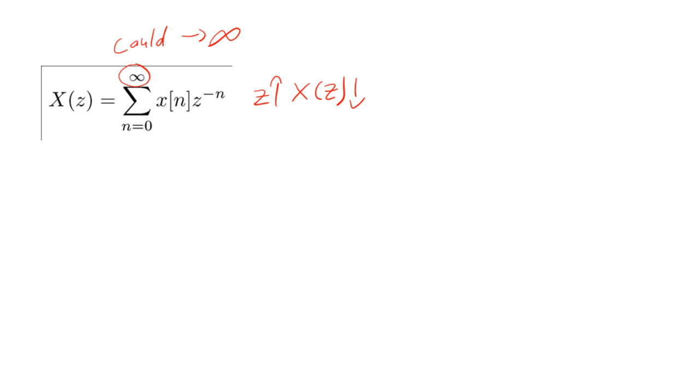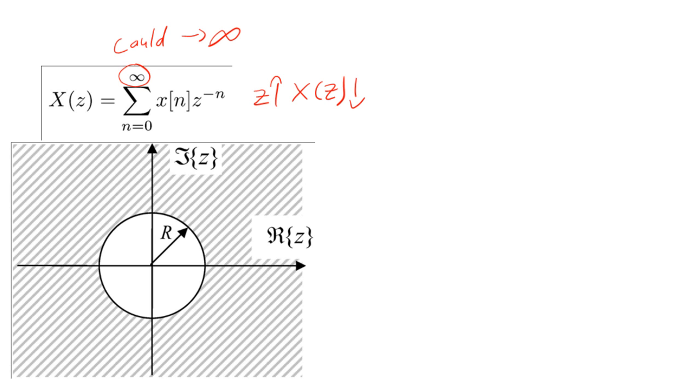When x of n times Z^(-n) shrinks to 0, the sequence will converge towards a constant value. Since Z is a complex number, we can plot the values of Z for which the transform will converge.